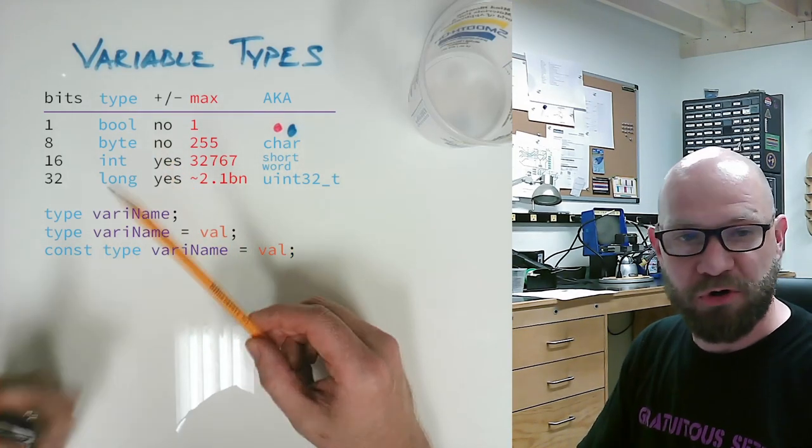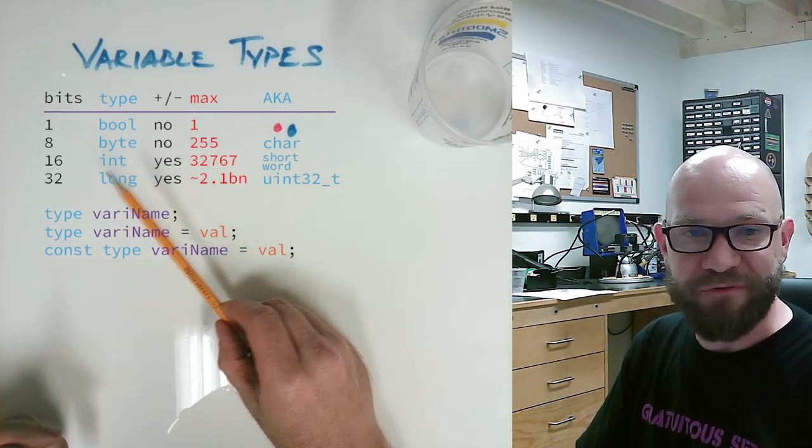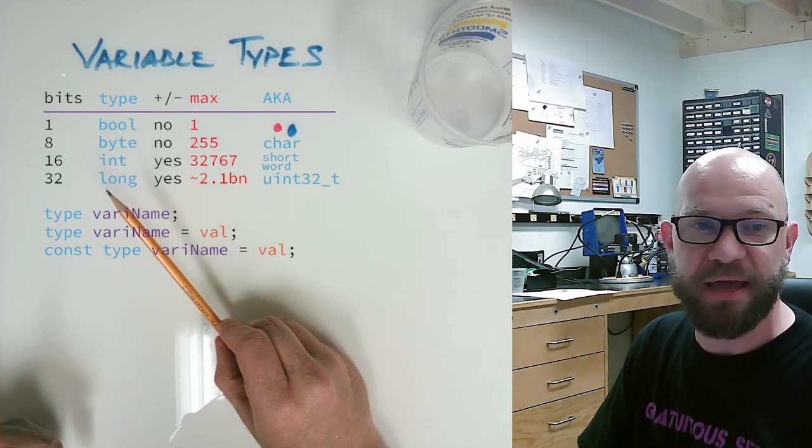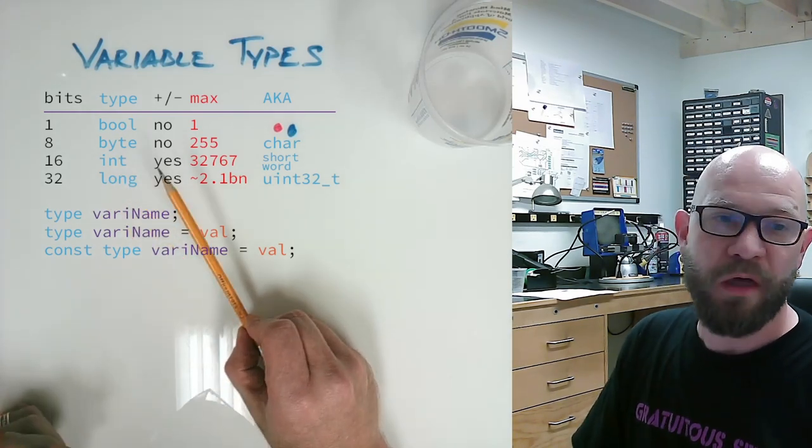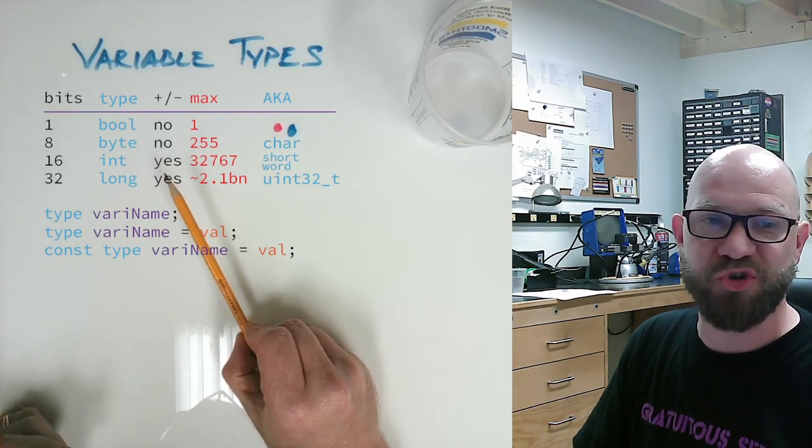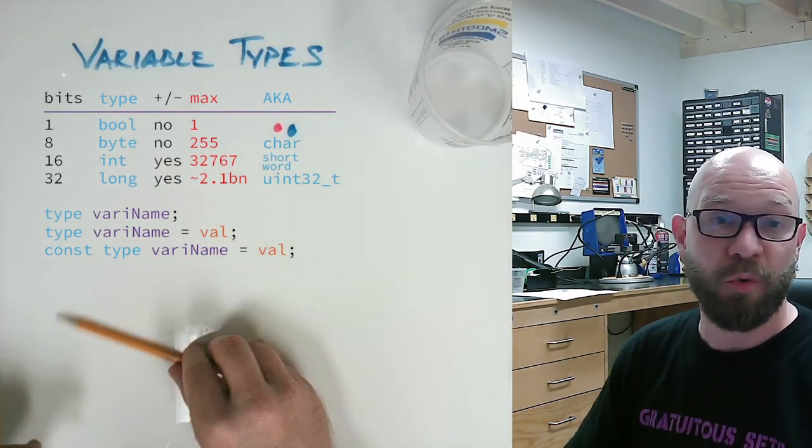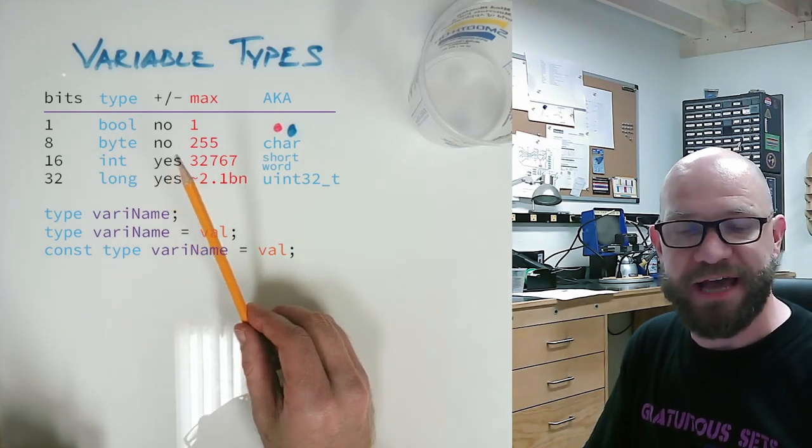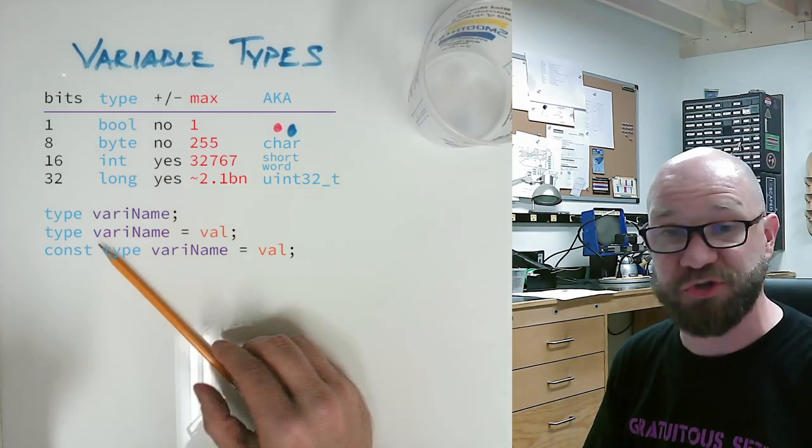Moving on up our chain of orders of magnitude for Arduino purposes, we have an integer, which abbreviates int, and we have long, which doesn't abbreviate, is just long. The last two of these are naturally signed. What this means is that they can be negative. Whereas a byte is just a big pile of data between zero and 255, the int and the long are naturally signed.